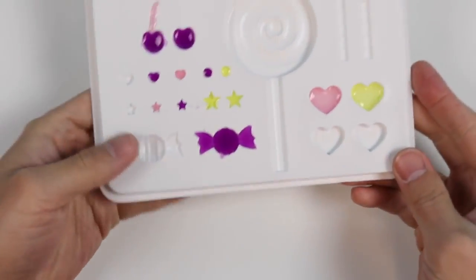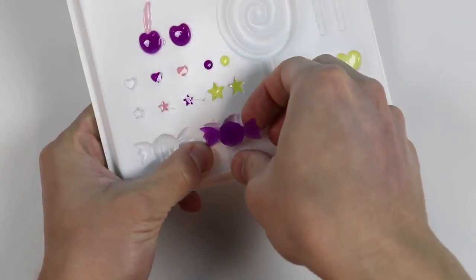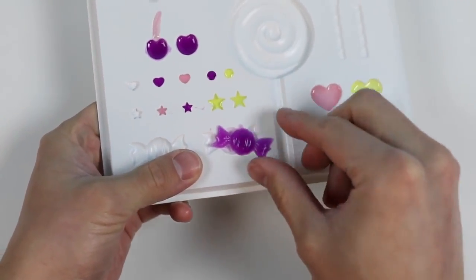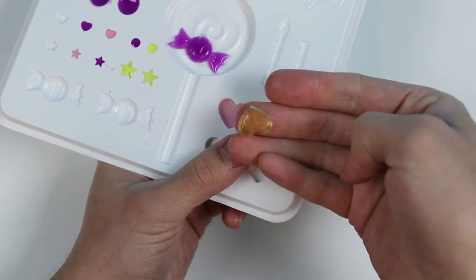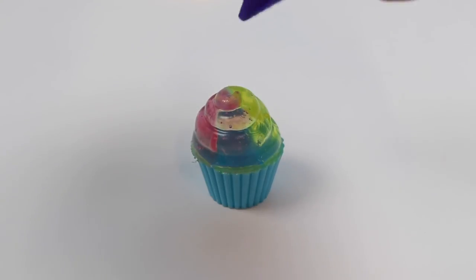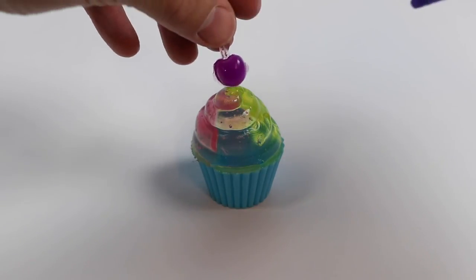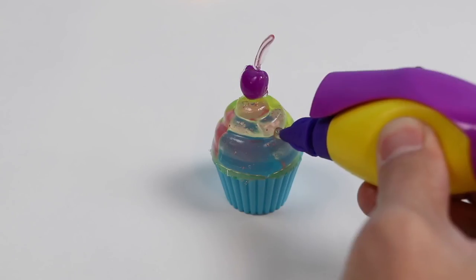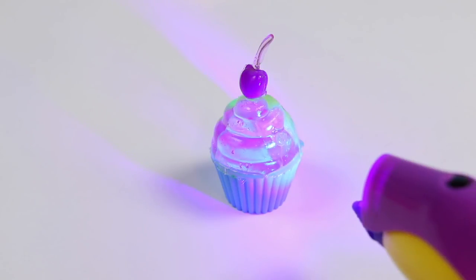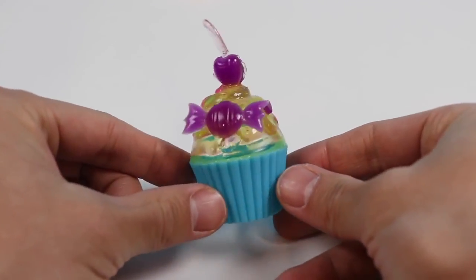Now let's decorate our sweet treats! Pop out the toppings! Here's a candy! A yellow heart! Okay, let's move on! Use the gel again to attach a cherry on top of the cupcake! Add a few more toppings! And check out how pretty this cupcake is!